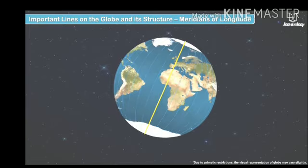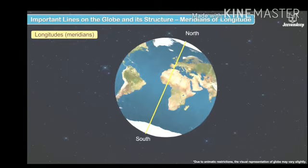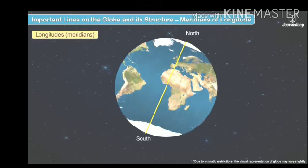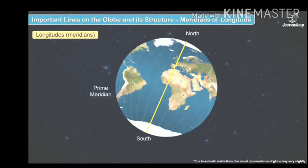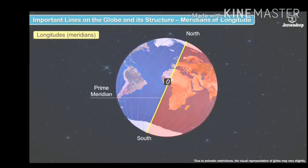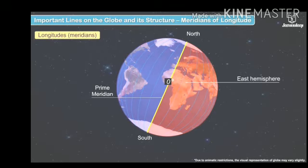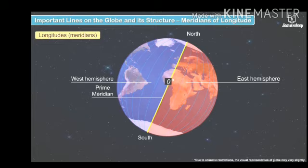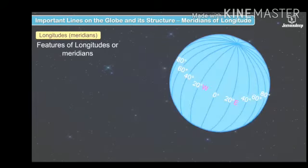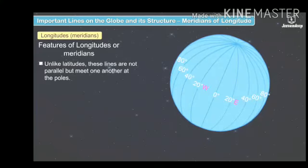Now when it comes to the vertical lines, they are called longitudes. Longitudes touch from the north to the south and are also called meridians. The zero degree meridian is called the Prime Meridian, which divides the Earth into the Eastern Hemisphere and the Western Hemisphere.